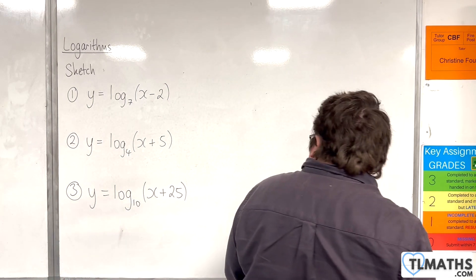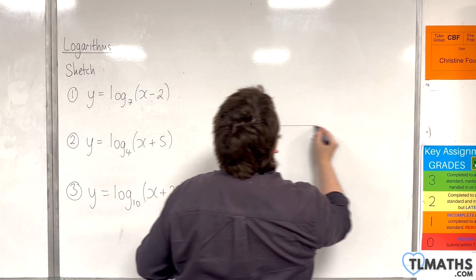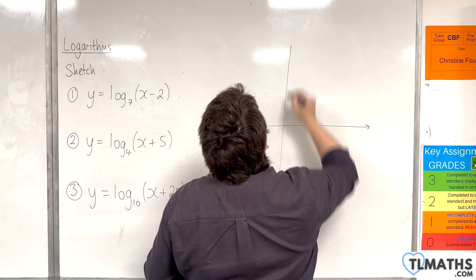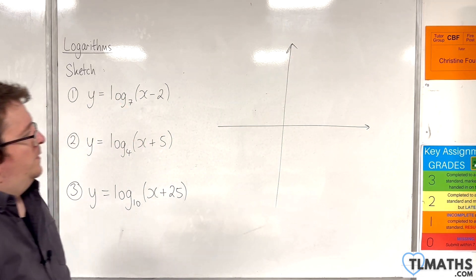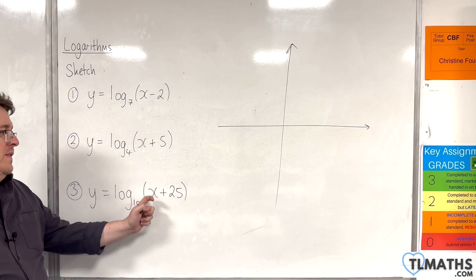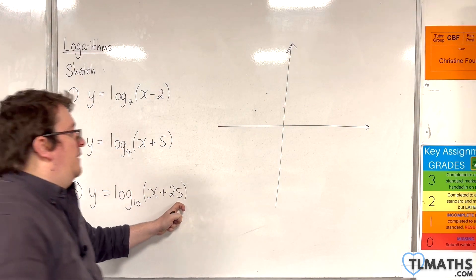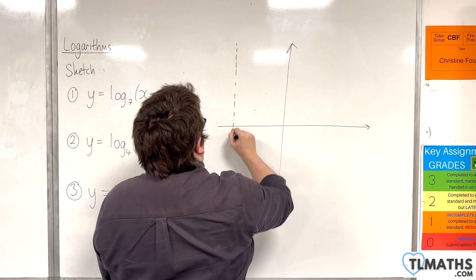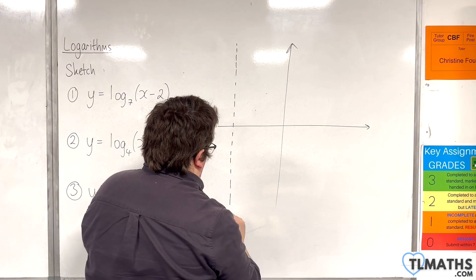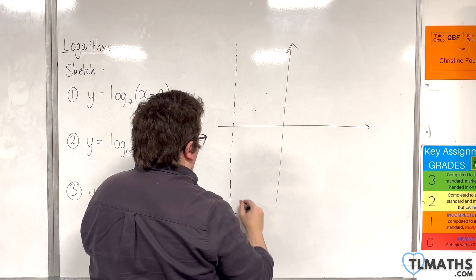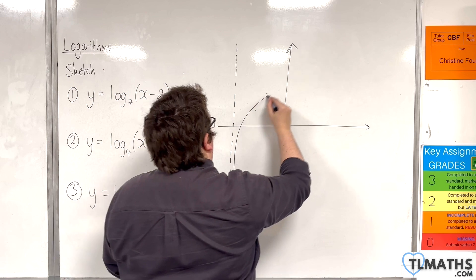So the last one. First of all, the vertical asymptote is when this bracket is 0. So that's when x is minus 25. Here's our logarithmic curve.